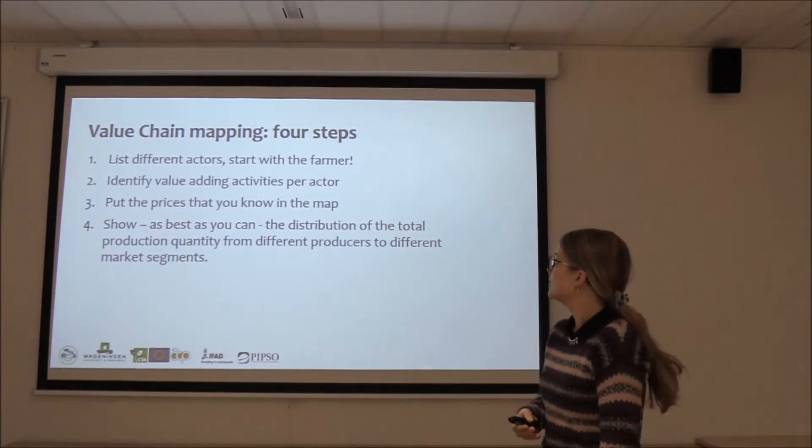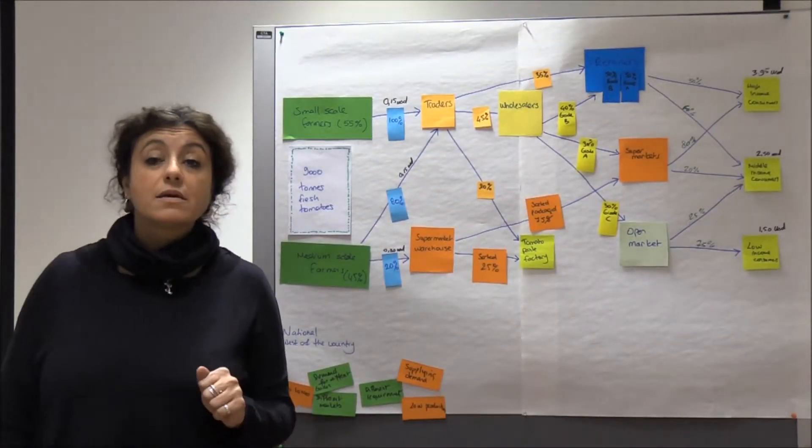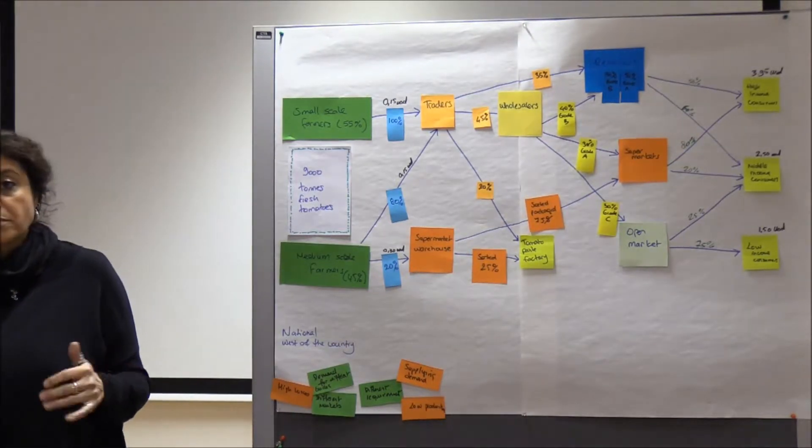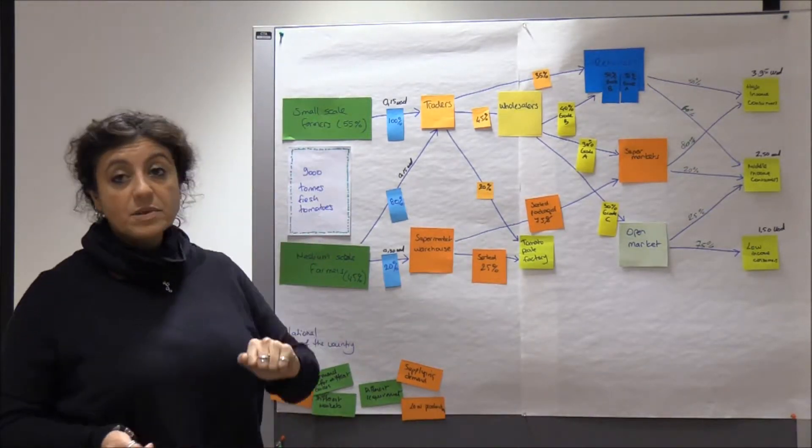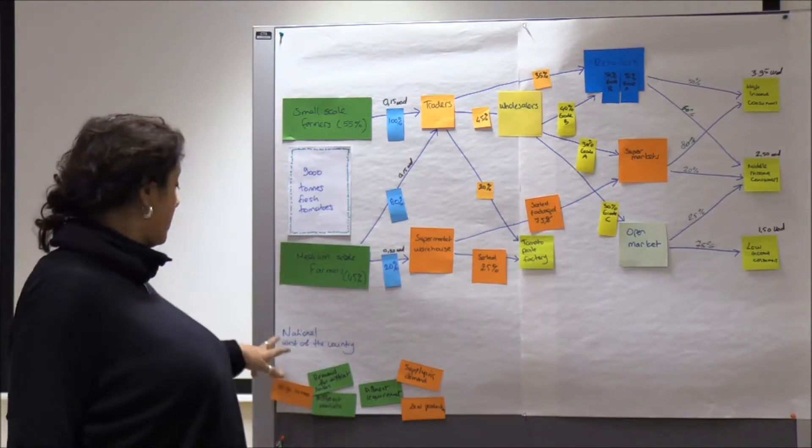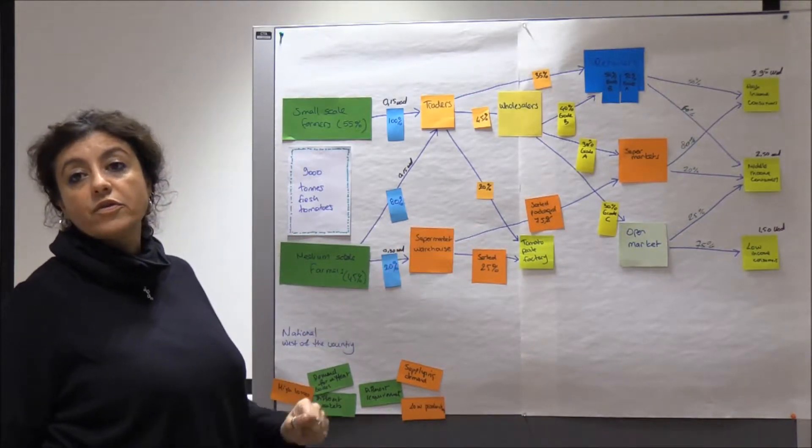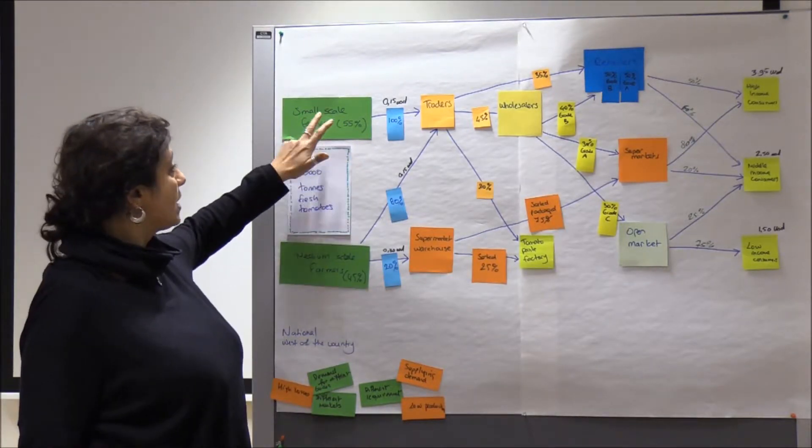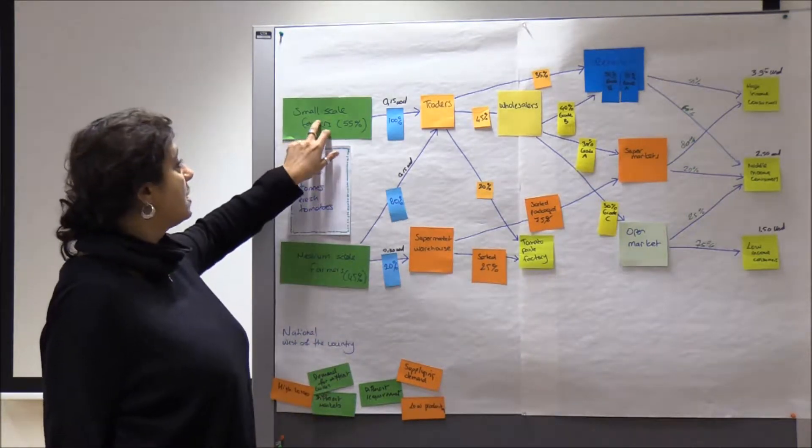Put the prices that you know on the map and show as best as you can the distribution of the total productivity quantity from different producers to different market segments. I'm taking up from what Jana just told you. She just explained that we take four steps. We suggest you four steps to develop your value chains. And the first one is to list your different actors. I just made an example for you with tomato production at national level aiming at national markets from the east of Turkey. My two actors at the beginning of the chain from the production side is the medium scale farmers and the small scale farmers.